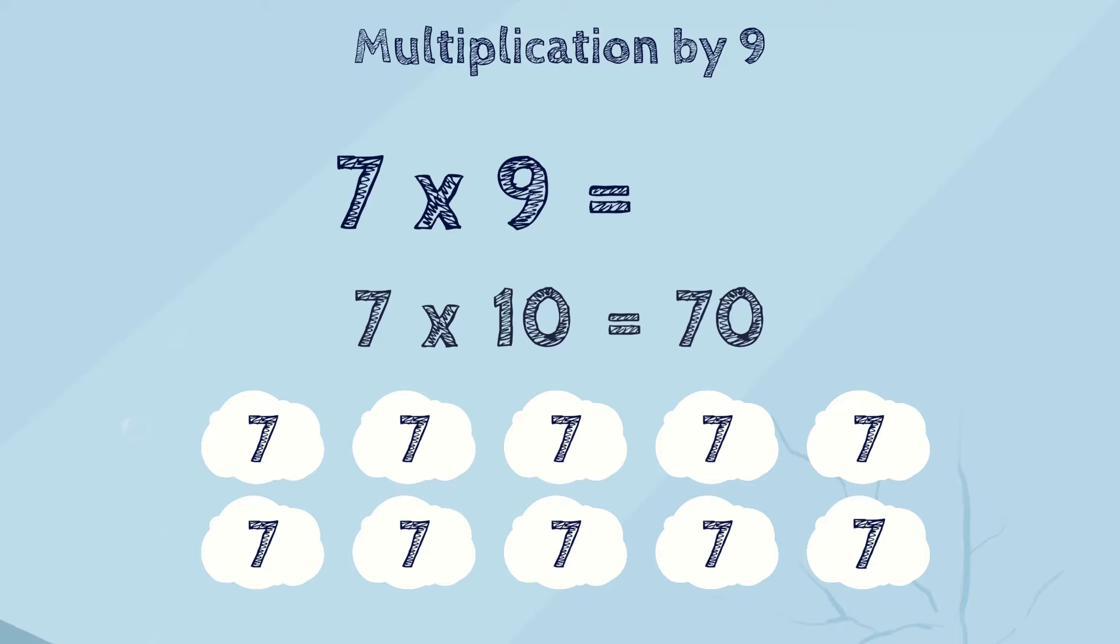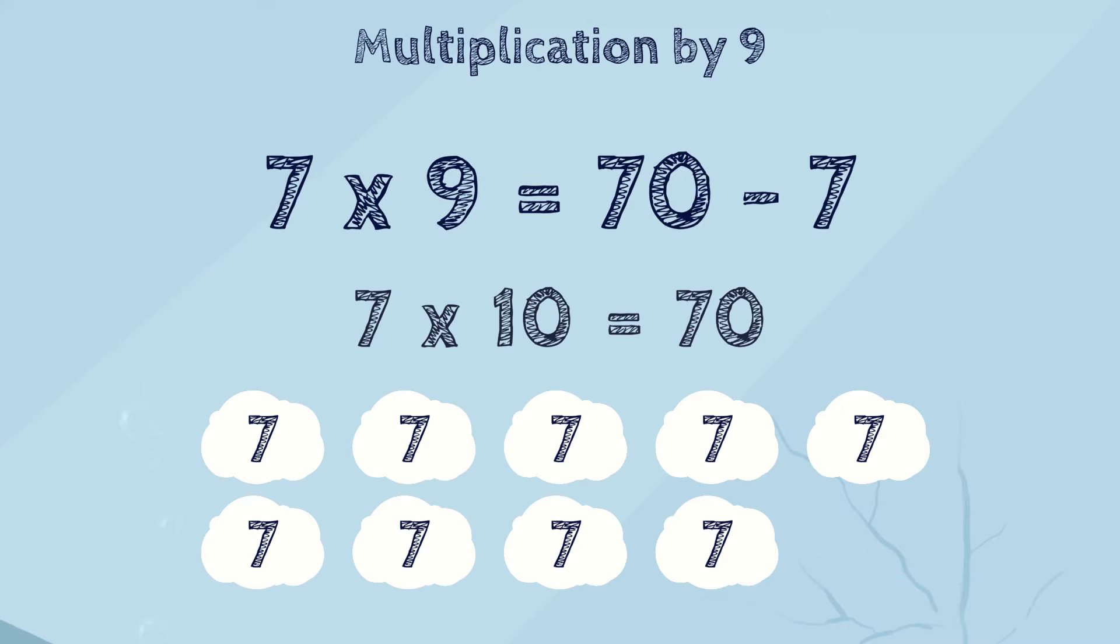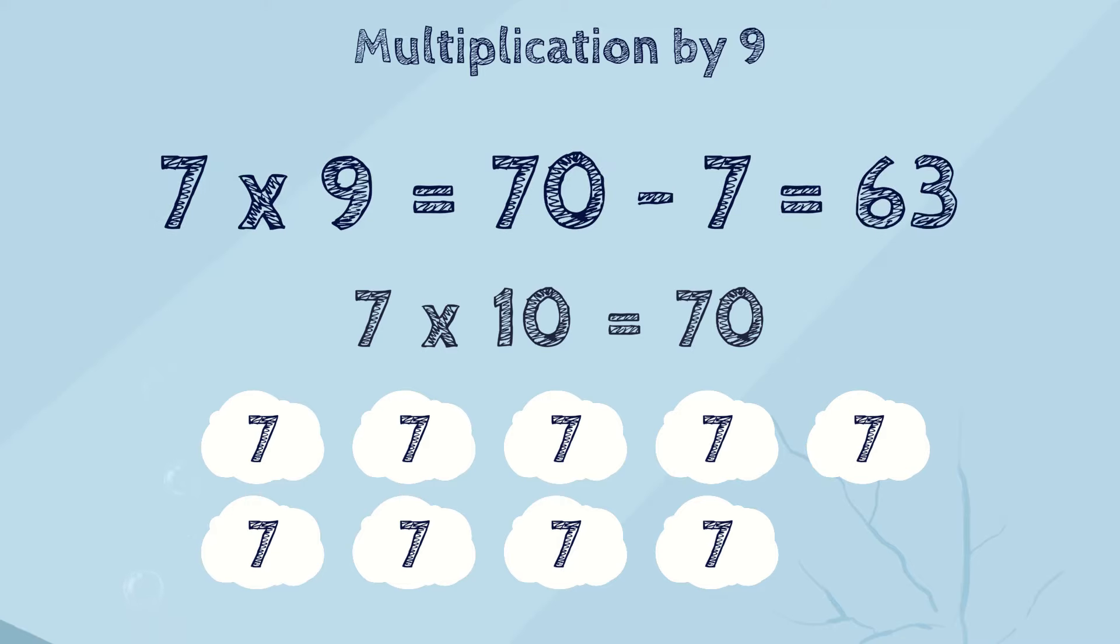Yes, you're right! If you know the answer of adding 10 sevens, but you need only 9 sevens, you can subtract 1 seven from the answer. So, it will be 70 minus 7. And, that's 63. So, 7 times 9 is 63.